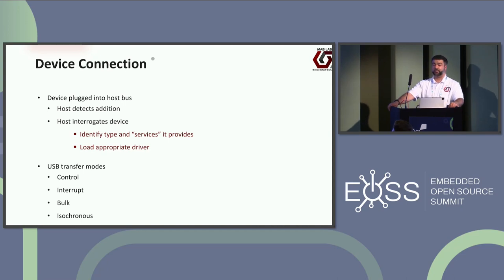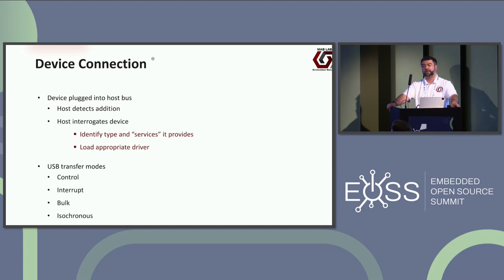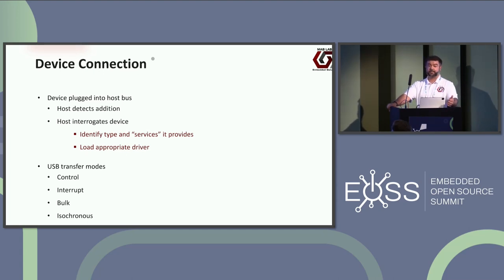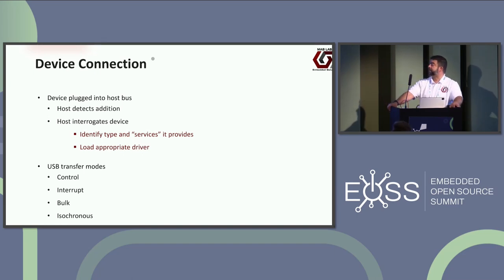Just a quick overview of how USB works before we dive in. When you plug your device into a PC, the host determines that something is connected and starts interrogating the device. It identifies the type of device and the services it provides, then loads the appropriate host driver. There are a couple of USB transfer modes: control, interrupt, bulk, and isochronous. The interrogation process is essentially the basis of a USB transaction. There's a token packet — a header that tells the device more is coming — an optional data packet with the actual payload, and then a status packet reporting success, NAK meaning not ready yet, or error correction.